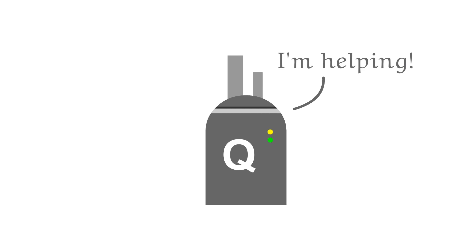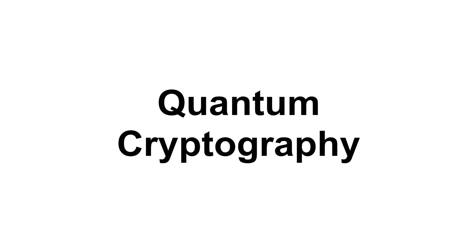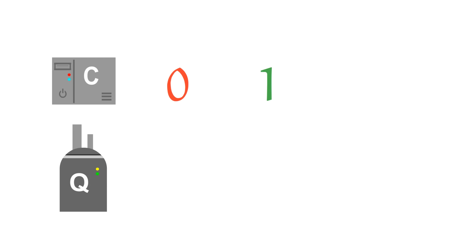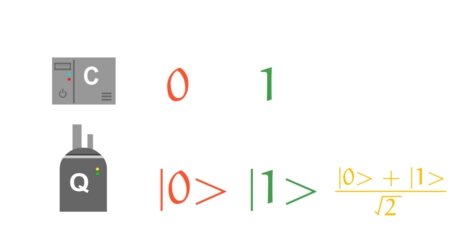They can let us do things with security that not even public-private keys can do. Welcome to quantum cryptography. Conventional computers use bits, which can each be either 1 or 0. Quantum computers use qubits, which can be 1 or 0 or some combination of the two.